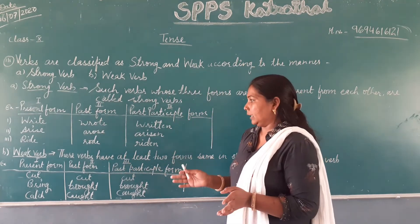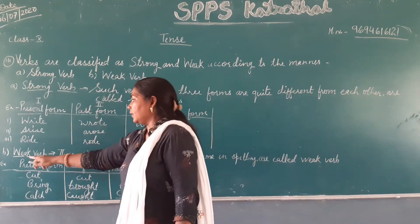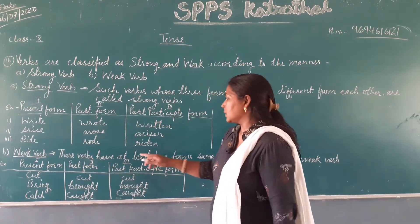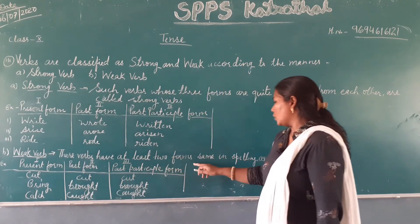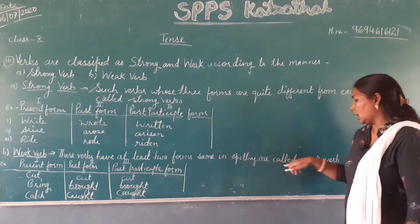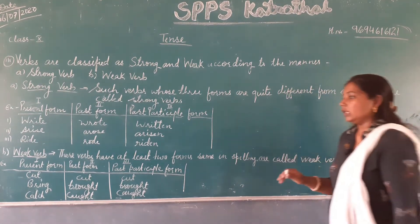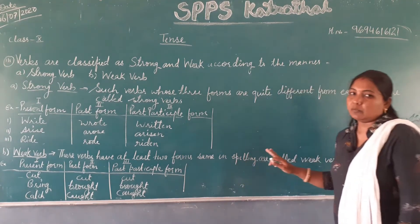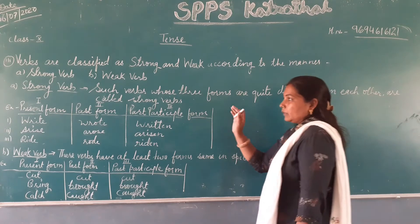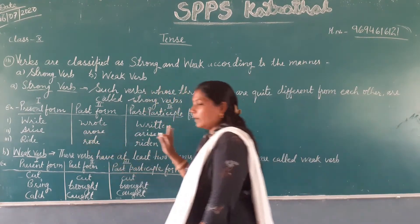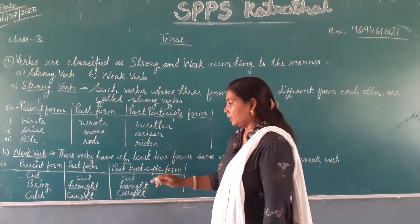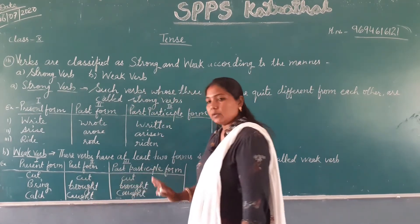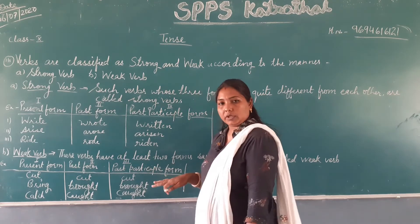The second part is weak verbs. Weak verbs are those verbs which have at least two forms same in spelling. So in strong verbs all three forms are different, whereas in weak verbs at least two forms are the same in spelling — either first and second are the same, or second and third are the same, or first and third are the same.